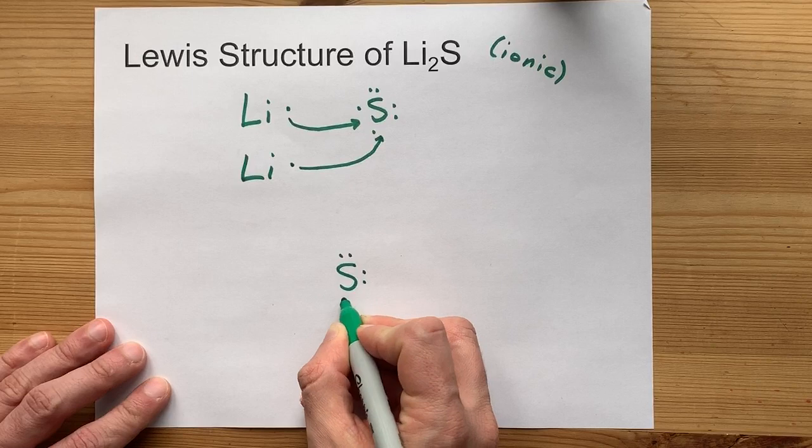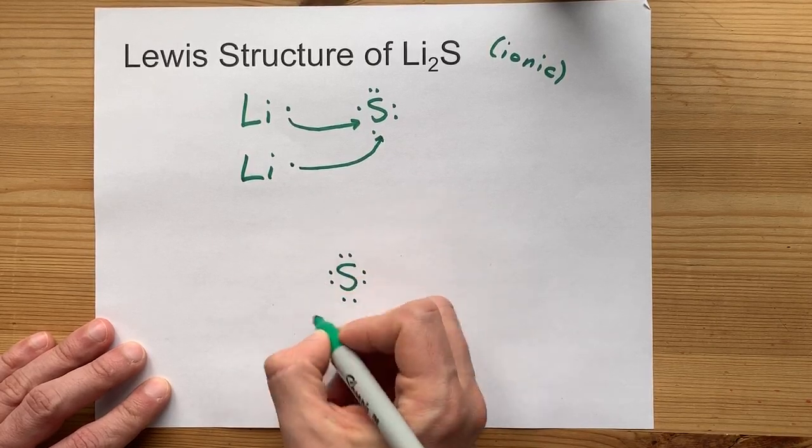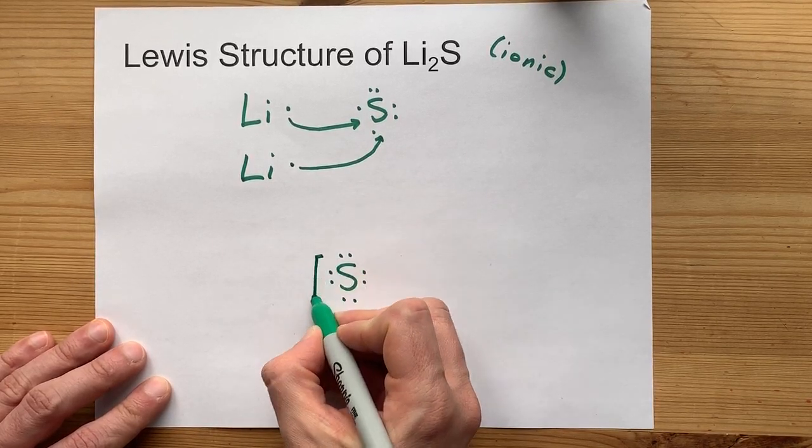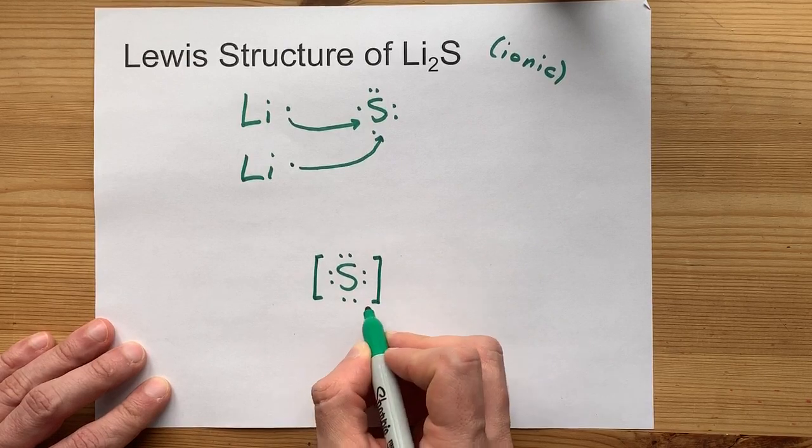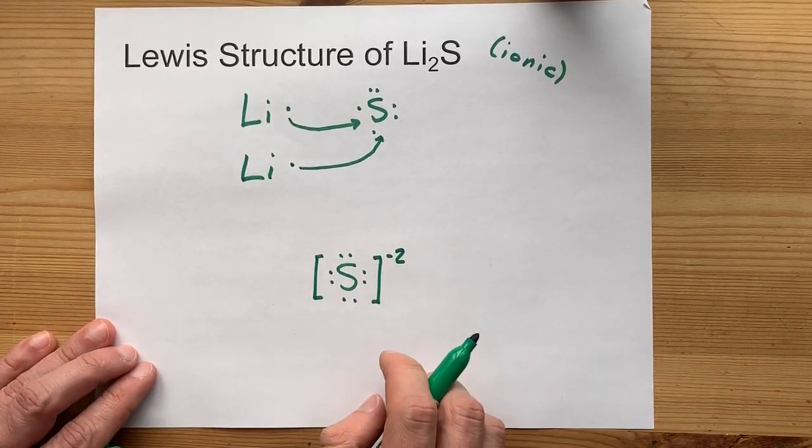Here's sulfur with its full eight valence electrons. That's two more than it brought with it. So it has a minus two charge.